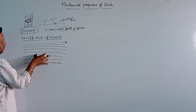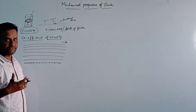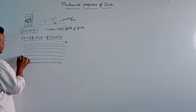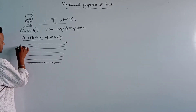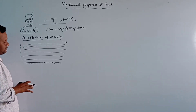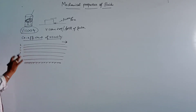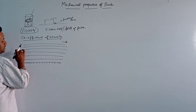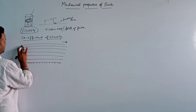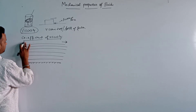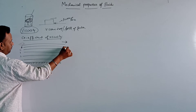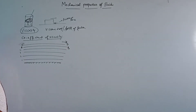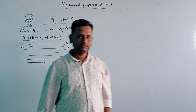This fluid has different layers. For example, these are the layers — one, two, three, four, five, six — I have considered six layers here. These are the layers of the fluid. Among these, let us consider AB and CD as two layers of the liquid which are moving in the forward direction.